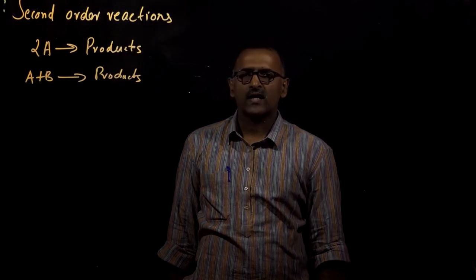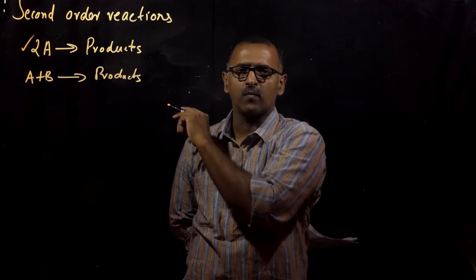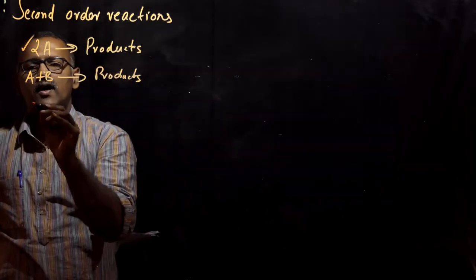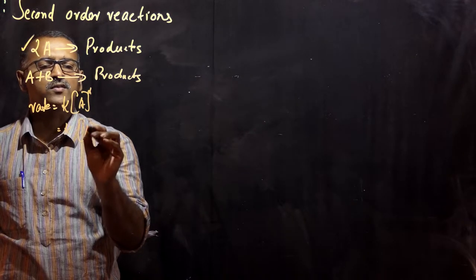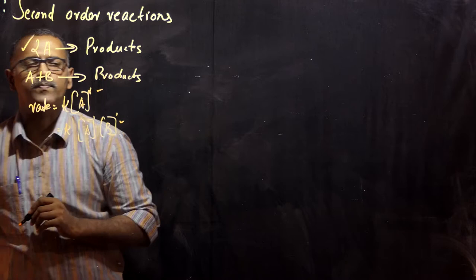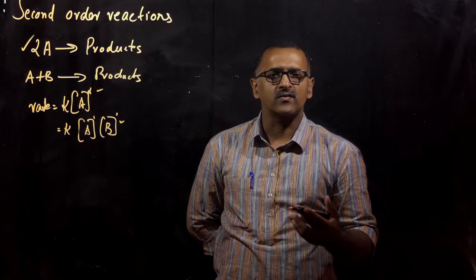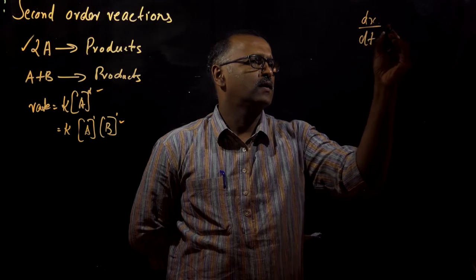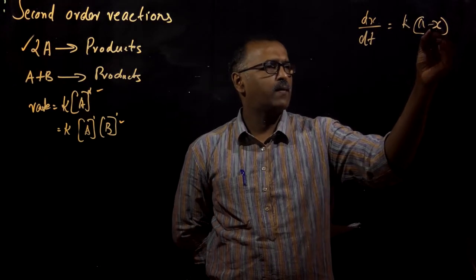Now let us see the second order reactions. Second order reactions can be of two types: either the same molecule 2A giving products, where rate equals K into [A]², or two different reactants A plus B giving products, where rate equals K[A][B]. Both give an overall order of 2. Let us see the integrated rate equation for the type 2A giving products.